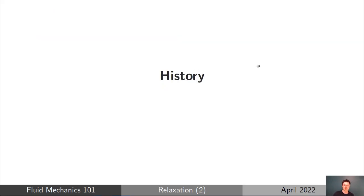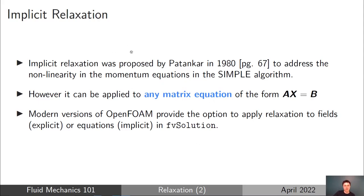Before finishing, a brief history of implicit relaxation: it's a relatively new mathematical technique, first proposed by Patankar in 1980 in his famous book on the SIMPLE algorithm — the relevant derivation is on page 67. It was introduced out of necessity because the momentum equations were found to be quite non-linear and difficult to solve, and implicit relaxation was needed to help the SIMPLE algorithm converge at all.